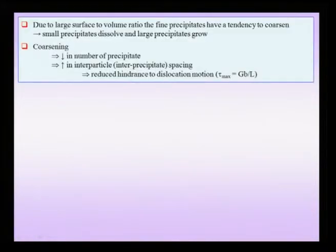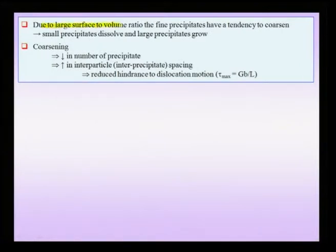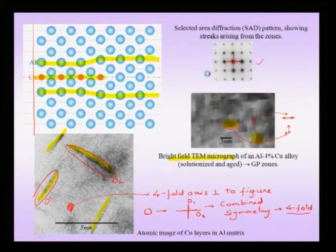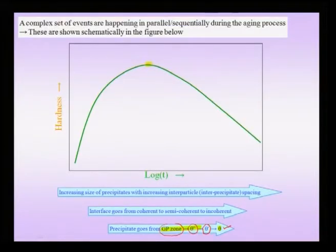Due to a large surface-to-volume ratio, fine precipitates tend to coarsen — small precipitates tend to dissolve and large precipitates tend to grow. Coarsening produces a decrease in number of precipitates with an increase in inter-particle spacing, which gives reduced hindrance to dislocation motion. We want to age such that we have a fine set of precipitates, close to the maximum in the hardness versus log time curve.